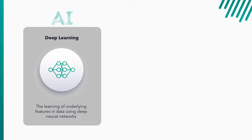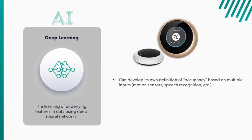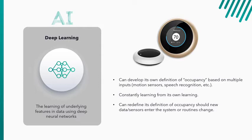So then we have a thermostat that uses deep learning, which is a form of machine learning, which is a form of artificial intelligence. This thermostat uses deep learning, so it uses convolutional neural networks. This thermostat can develop its own definition of occupancy and uses multiple inputs. So it uses motion sensors, sometimes from its own device or other devices in the home. It can use speech recognition, maybe from an Alexa or other inputs that it finds useful to predict or understand what occupancy is. And it is constantly learning from its own learning. And it defines its own definition of occupancy and routines and is constantly adjusting to those things. It can also redefine its definition of occupancy should new data or sensors enter the system or routines change.